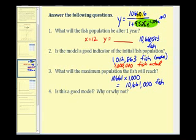And therefore the numerator of this fraction, rounded to the nearest integer, gave us the maximum fish population. And that's true for any logistic growth function.